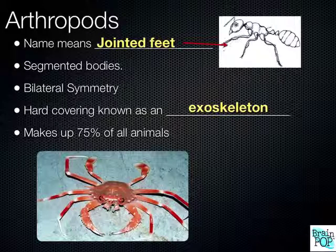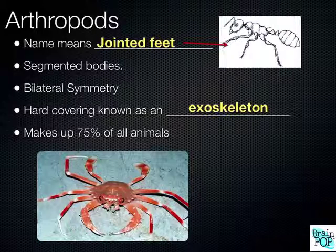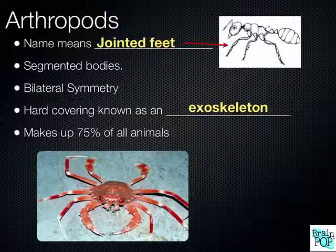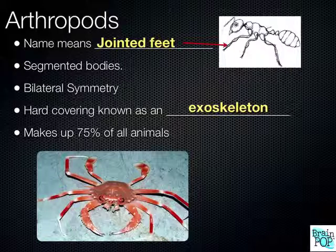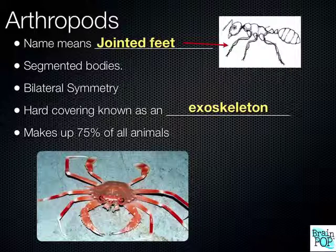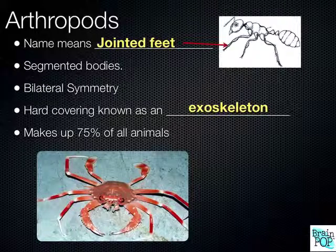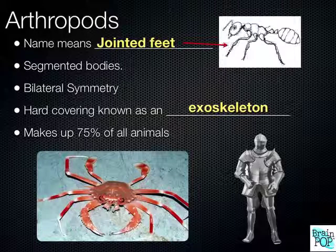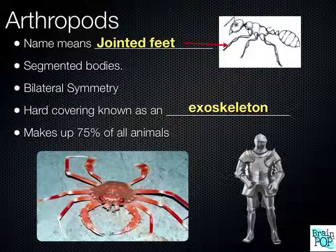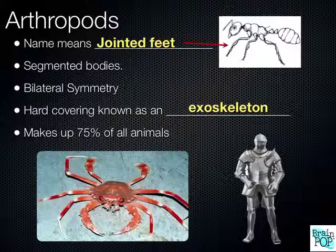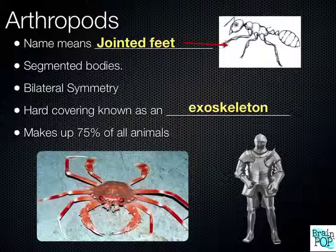The exoskeleton is helpful for protection but doesn't grow once formed. So how do arthropods grow? They molt — they break out of their exoskeleton, grow larger, and then produce a new one. During that time after molting they're vulnerable because they don't have that protective shell. I have an exoskeleton from a beetle on our swing set — you can see where it's split in the back. They grab onto something, break out through the back, leaving the exoskeleton stuck there while they grow larger.